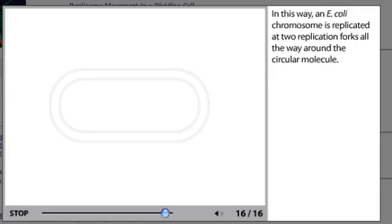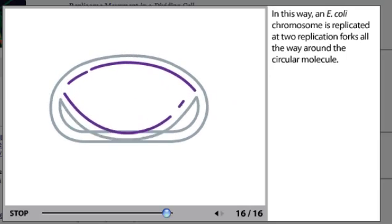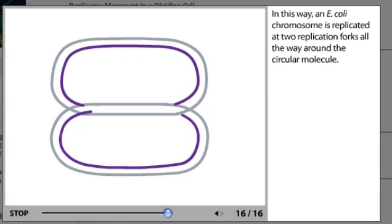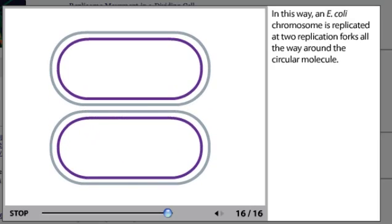In this way, an E. coli chromosome is replicated at two replication forks, all the way around the circular molecule.